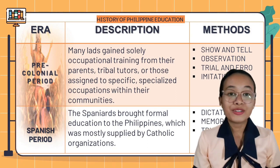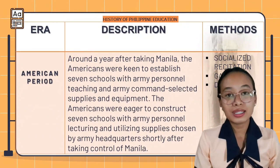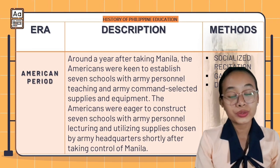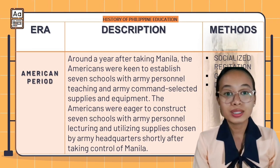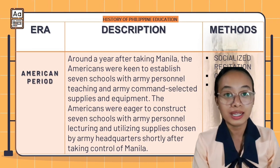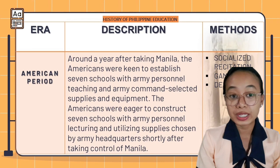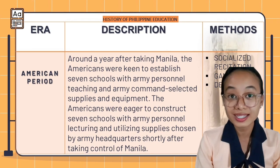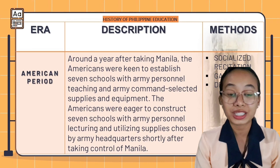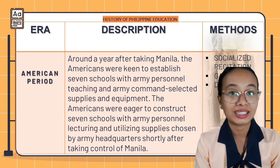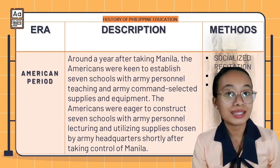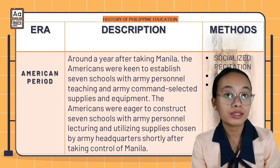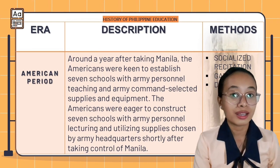Around a year after taking Manila, the Americans were eager to construct seven schools with army personnel lecturing and utilizing supplies chosen by the army headquarters. In the same year, 1899, more schools were opened with 24 English teachers and 4,500 students.